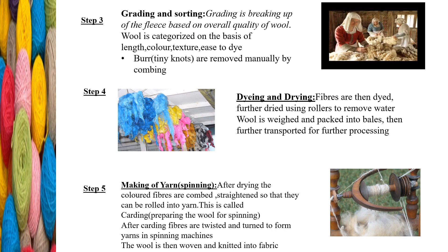Step 3 is grading and sorting. Grading is breaking up the fleece based on the overall quality of wool. The wool is separated into various categories on the basis of length, texture, color, and ease of dyeing. The fleece is combed to remove burrs — tiny knots formed in the fleece. Fewer burrs means better quality wool. Step 4 is dyeing and drying. Natural fleece is either white, black, or brown in color and can be dyed with various colors. Roller machines squeeze excess water from the fleece, but it is not allowed to dry completely.